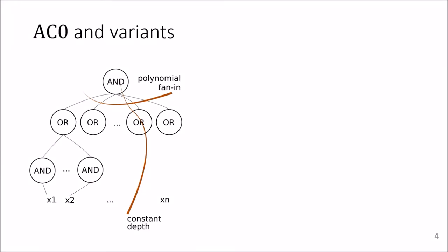The low complexity classes we focus on in this work are variants of AC0. So AC0 is the complexity class of circuits with AND and OR gates of polynomial fan-in and constant depth, as you can see here in the slide. And we will consider also AC0 on top of parities.